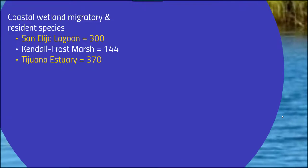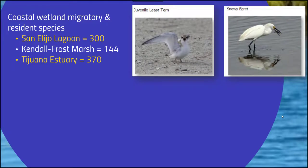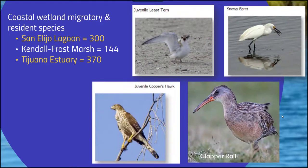Estuary birds have quite large diversity as well. In coastal wetlands, we have migratory as well as resident species. In San Elijo Lagoon, there are approximately 300 species that either migrate to or are residents of these lagoons. In the Kendall Frost Marsh, there are 144 different species. The Tijuana Estuary has approximately 370 species of birds that rely on it, including the juvenile least tern and the snowy egret. There are also more predatory species such as the juvenile Cooper's hawk and the clapper rail.